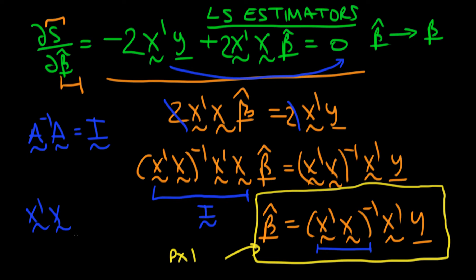An example of when x prime x is in fact singular is when we have perfect collinearity amongst regressors. So if I have perfect collinearity, then it turns out that basically a couple of my rows, you can think about them as being identical to one another, so I actually can't invert this thing. It is singular, which means that we can't actually derive our least squared estimators beta hat in this particular case.